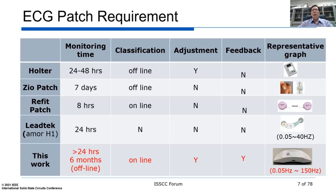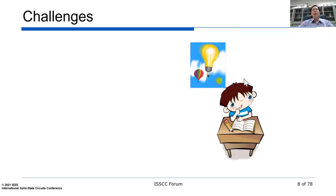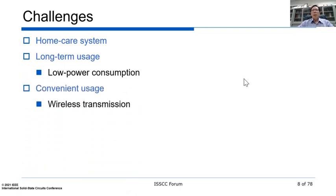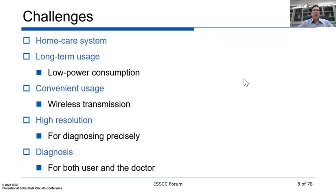In our research, we developed an ECG patch — a 24-hour ECG acquisition system used in NCKU Hospital. However, current wired devices are uncomfortable for patient use. Even existing ECG products lack offline classification, which is insufficient. The main challenges for developing an ECG patch for home care include long-term usage requiring low power consumption, convenient usage requiring wireless communication, high resolution for diagnosis, and diagnosis with digital signal processing and artificial intelligence.